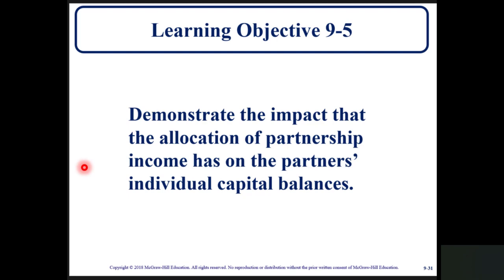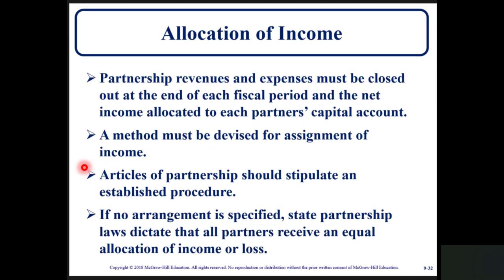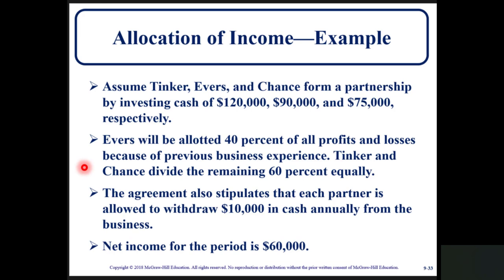Learning objective 9-5: demonstrate the impact that allocation of partnership income has on partners' individual capital balances. Partnership revenues and expenses must be closed out at the end of each fiscal period and the net income allocated to each partner's capital account. A method must be devised for the assignment of income, and the Articles of Partnership should stipulate an established procedure. If no arrangement is specified, state partnership laws dictate that all partners receive an equal allocation of income and losses.